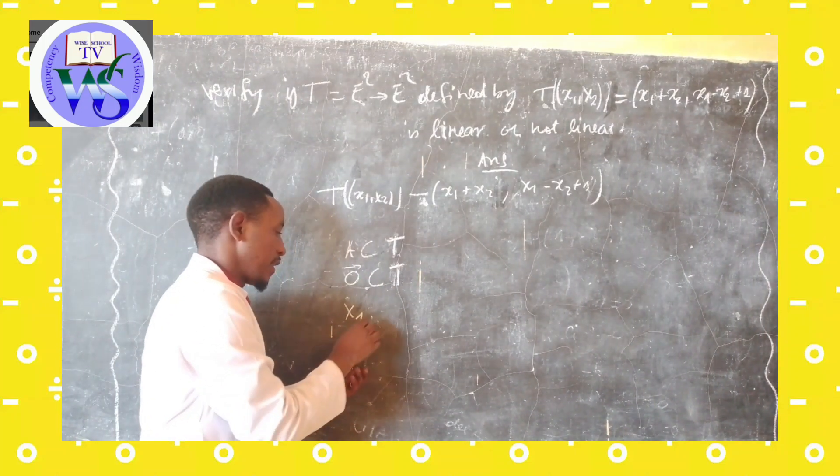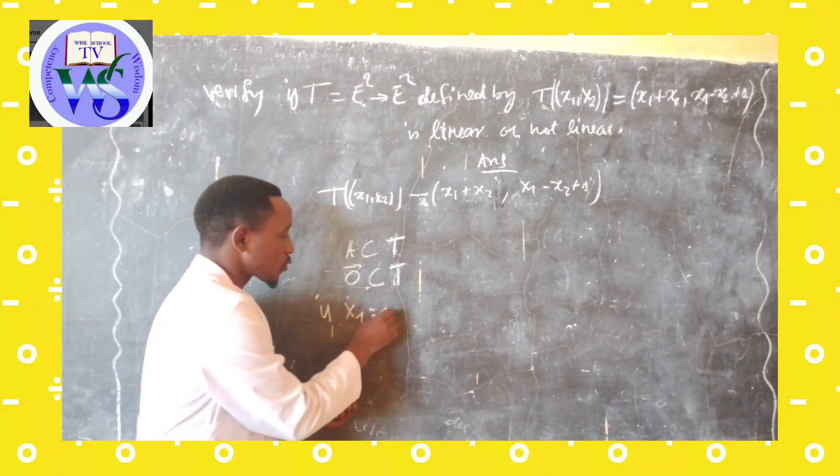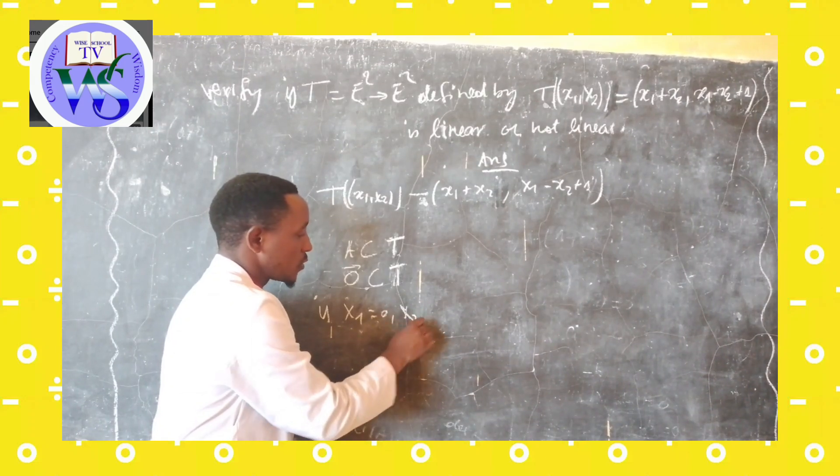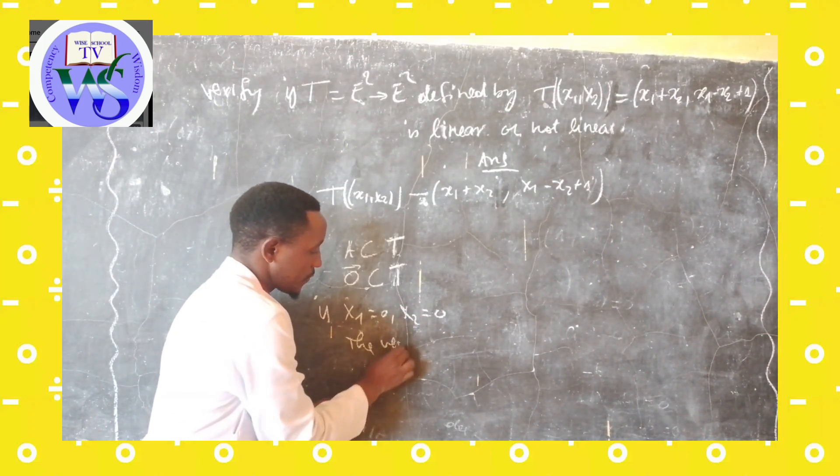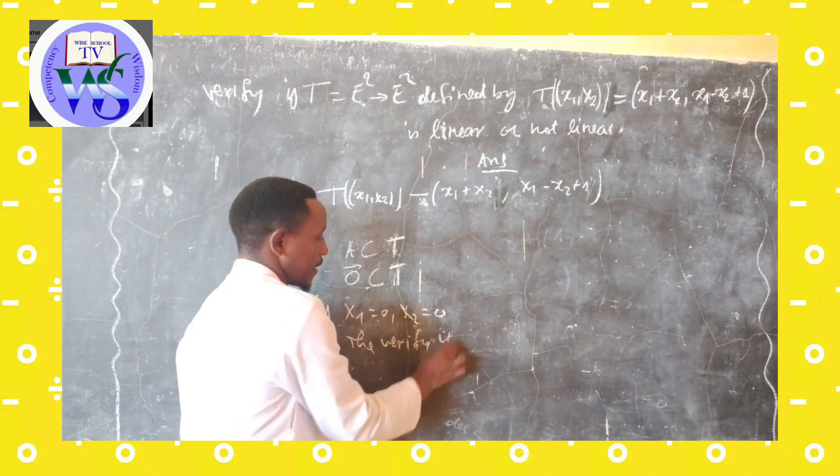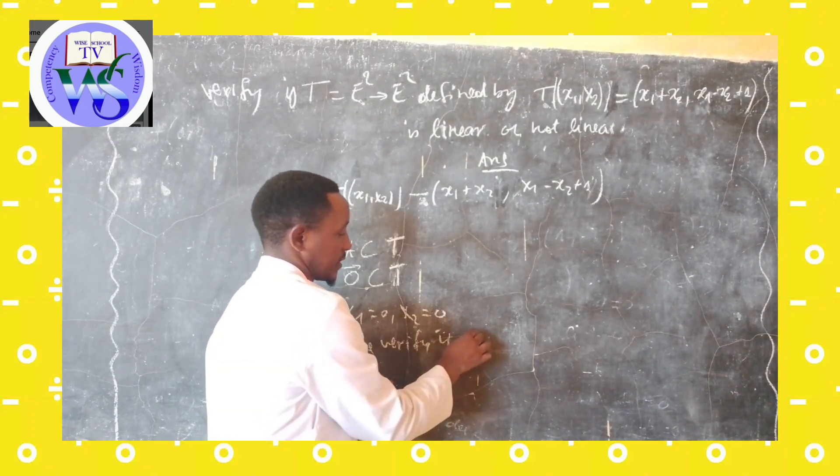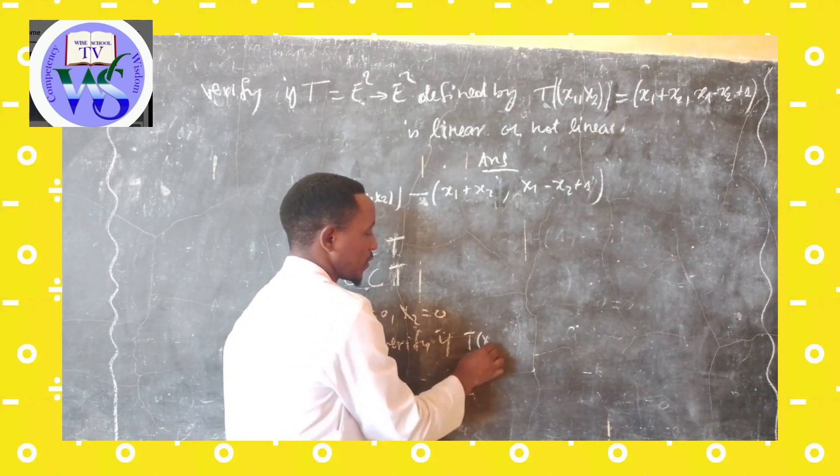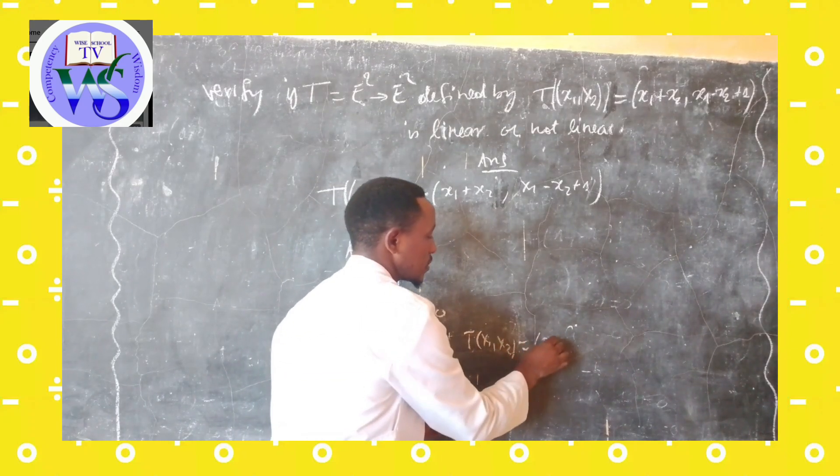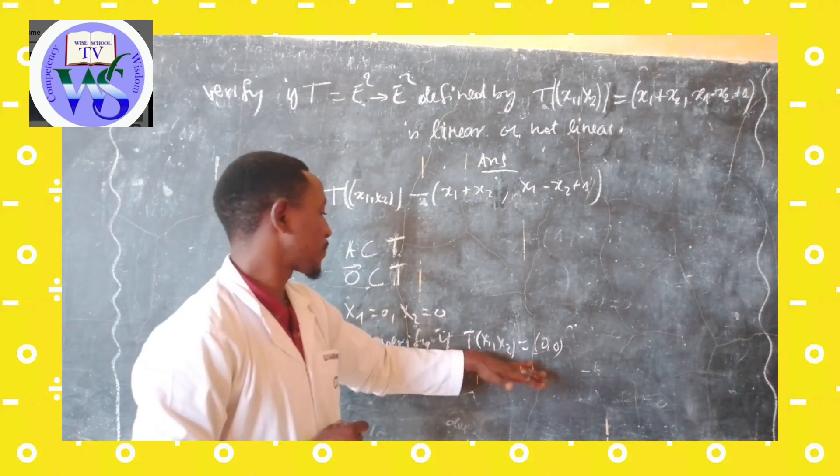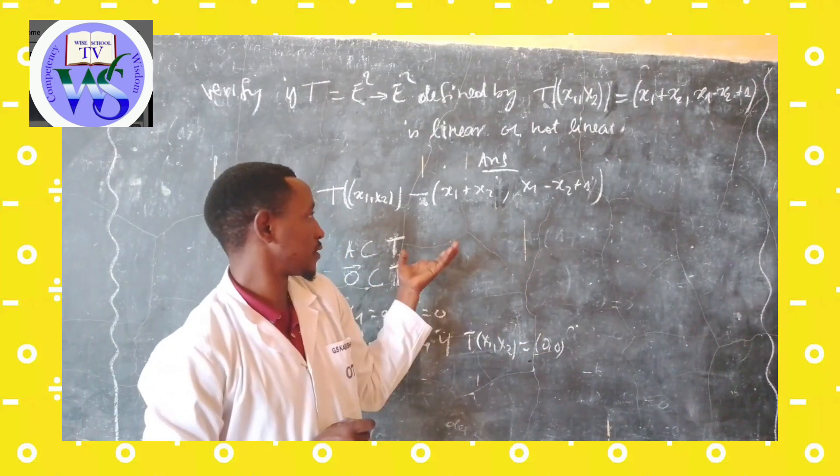If x1 is equal to zero and x2 is equal to zero, then verify if T must be—T of x1, x2 must be equal to zero and zero. So we are going to replace this in our equation.